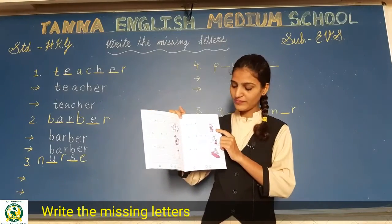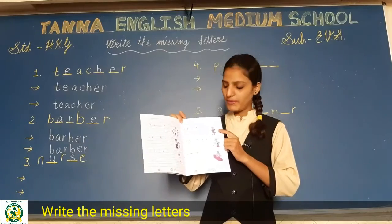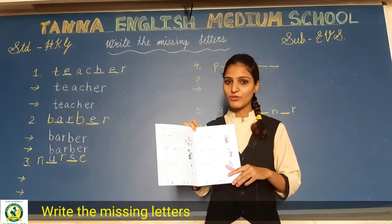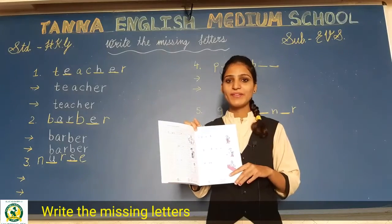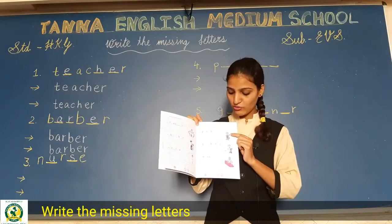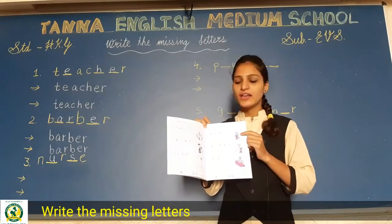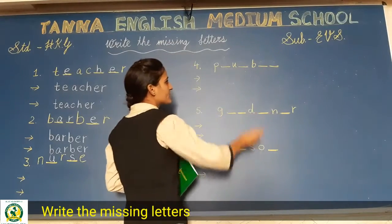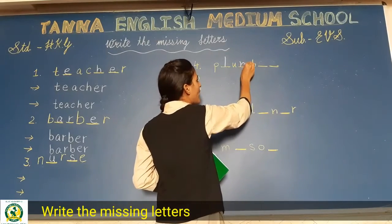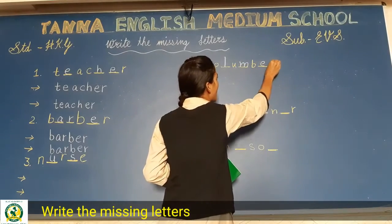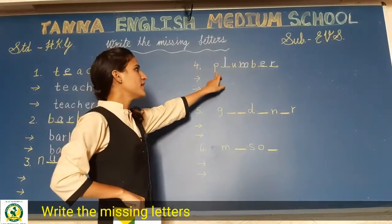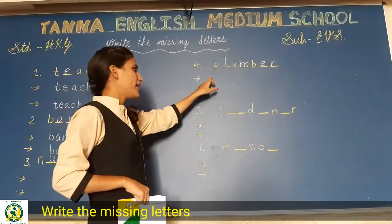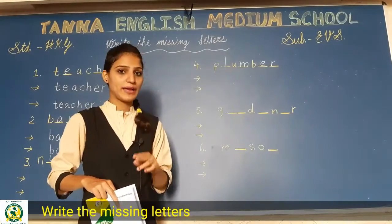अभी next page पर देखो — यह कौन है? Plumber। जब हमारे घर पर taps या pipes में कोई problem होती है तो हम plumber को बुलाते हैं — वो ठीक करके देता है। Plumber का spelling: P-L-U-M-B-E-R, plumber. You have to write the spelling of plumber two times।